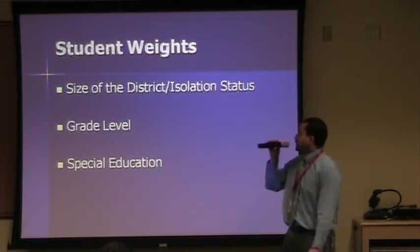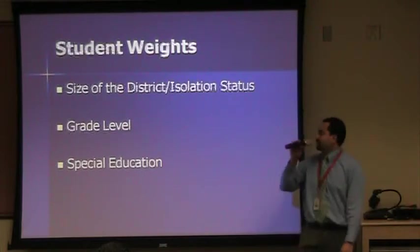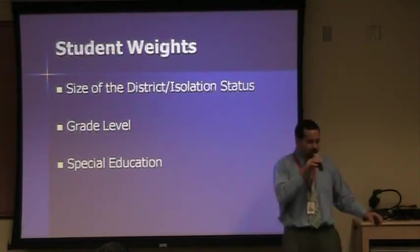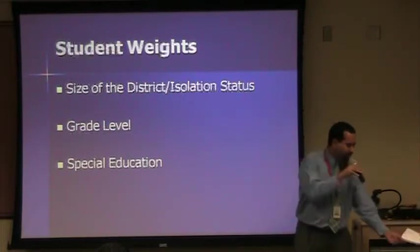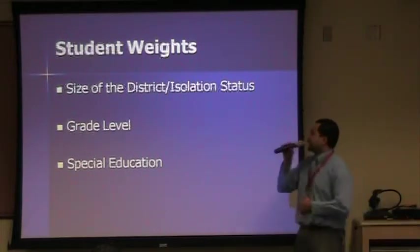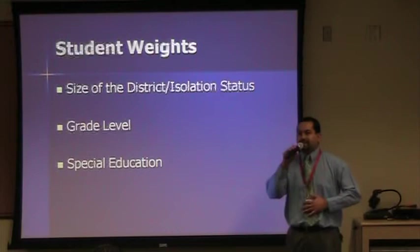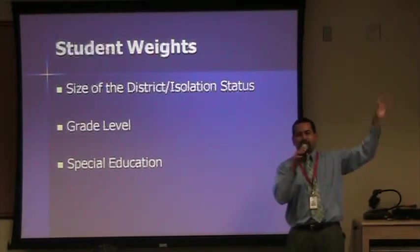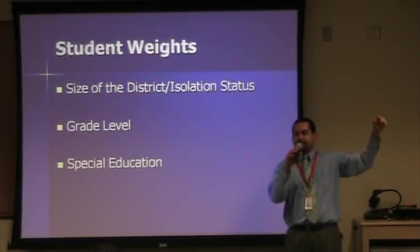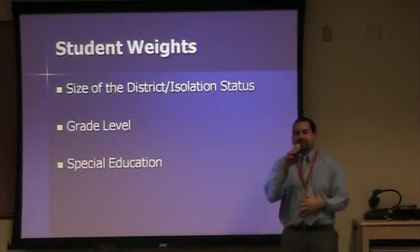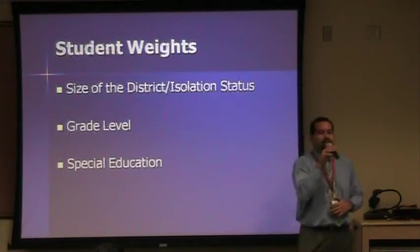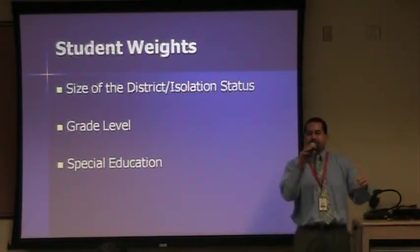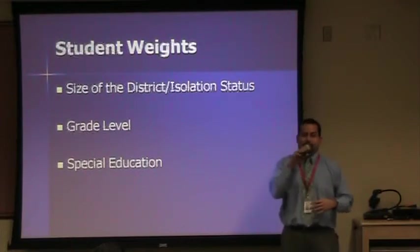To recap the different factors we've talked about: size of the district, grade level, and special education. There's also isolation status — districts that are way out in the boondocks, where a school might be 30 miles from the nearest district school. Those districts get different weights because when you're out there in the middle of nowhere, you do have some higher expenses as well.